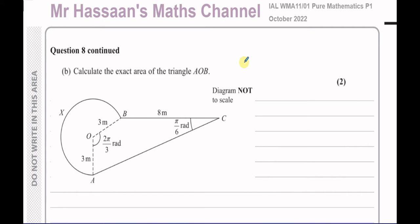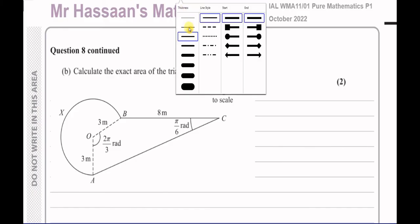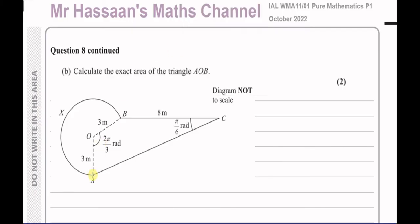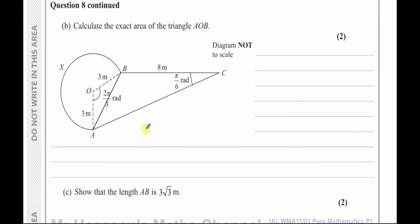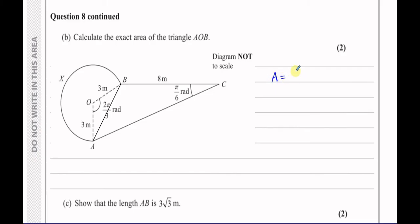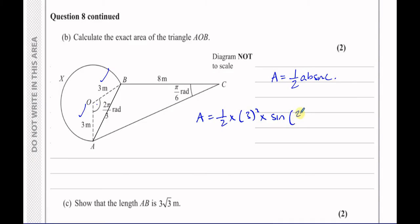Part B says: calculate the exact area of triangle AOB. Triangle AOB is this isosceles triangle formed by joining A and B. We know the two sides that make the angle, so we use the formula area = ½ab sinC. So area = ½ × 3 × 3 × sin(2π/3).